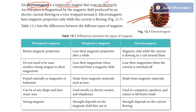An iron piece is magnetized by the magnetic field produced by electric current flowing in a wire wrapped around it. Here you can see there is an iron ring, and this copper wire is wrapped around that iron ring. When you flow an electric current through this copper wire, a magnetic field is produced around it. Because of that magnetic field, the iron ring will behave like an electromagnet — like a magnet.